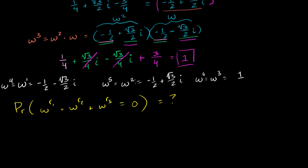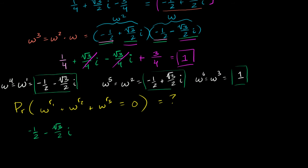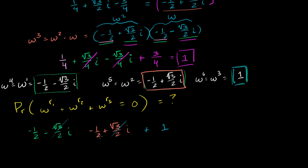To figure this out, let's find what combinations of powers of omega can add up to 0. The only way they can cancel out is if we take one of each: omega, omega squared, and 1. If I take negative 1/2 minus the square root of 3 over 2 times i, and add it to negative 1/2 plus the square root of 3 over 2 times i, and then add 1, the imaginary parts cancel, negative 1/2 plus negative 1/2 equals negative 1, and negative 1 plus 1 equals 0. So we need one each of these powers of omega.